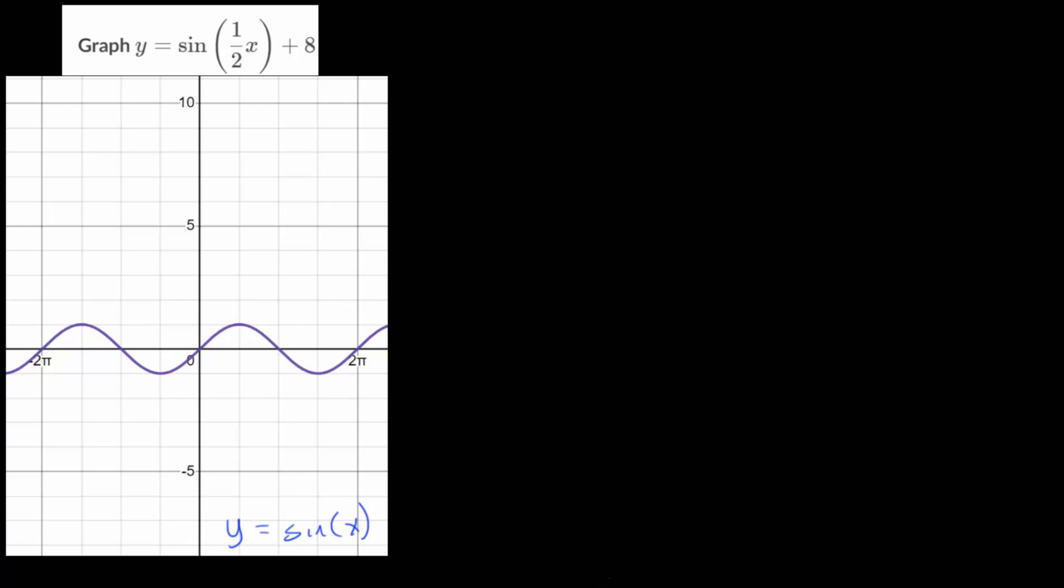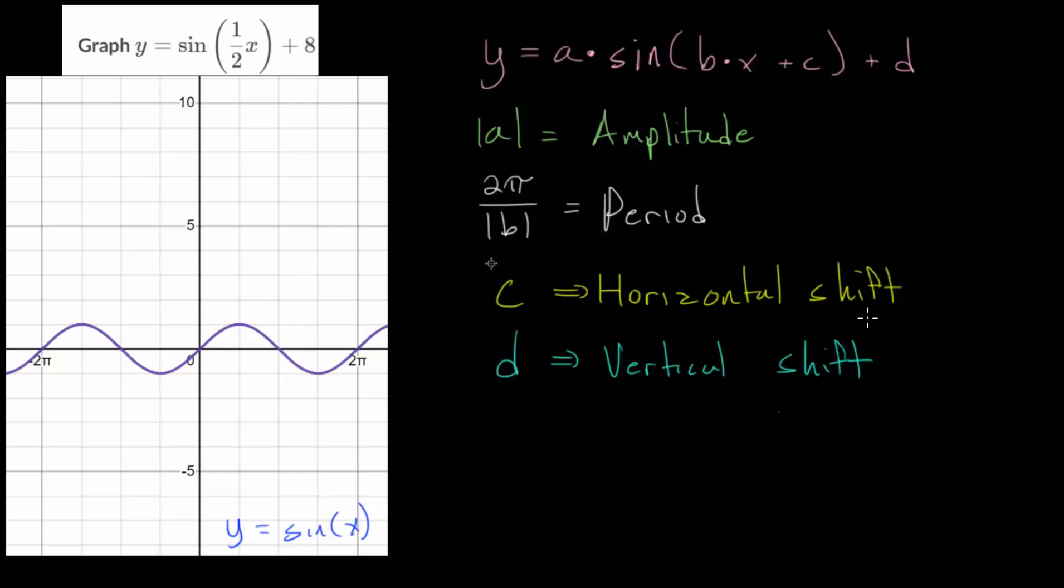So let me paste that in and we can discuss it. We have the equation y equals a multiplied by the sine or the cosine of b times x plus c on the inside and then plus d on the outside. Where a, or the absolute value of a, gives us our amplitude. If a is negative, we get a reflection about the midline.